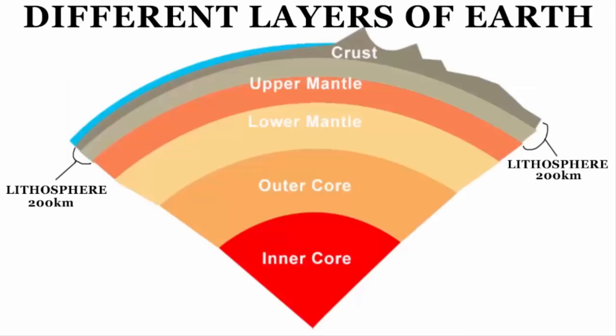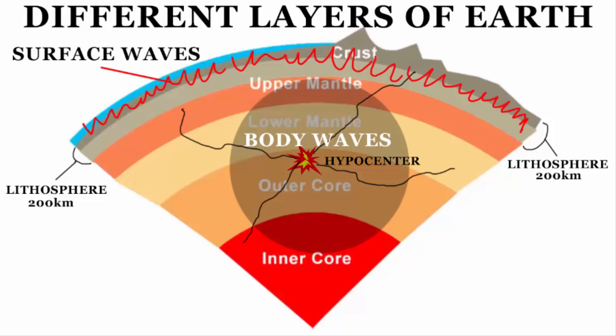Earthquake waves are basically of two types: body waves and surface waves. Body waves are generated due to the release of energy at the focus, and move in all directions, traveling through the body of the earth. It travels internally within the earth and moves through the interior. That's why it is referred to as body waves, because it is traveling through the body of the earth.